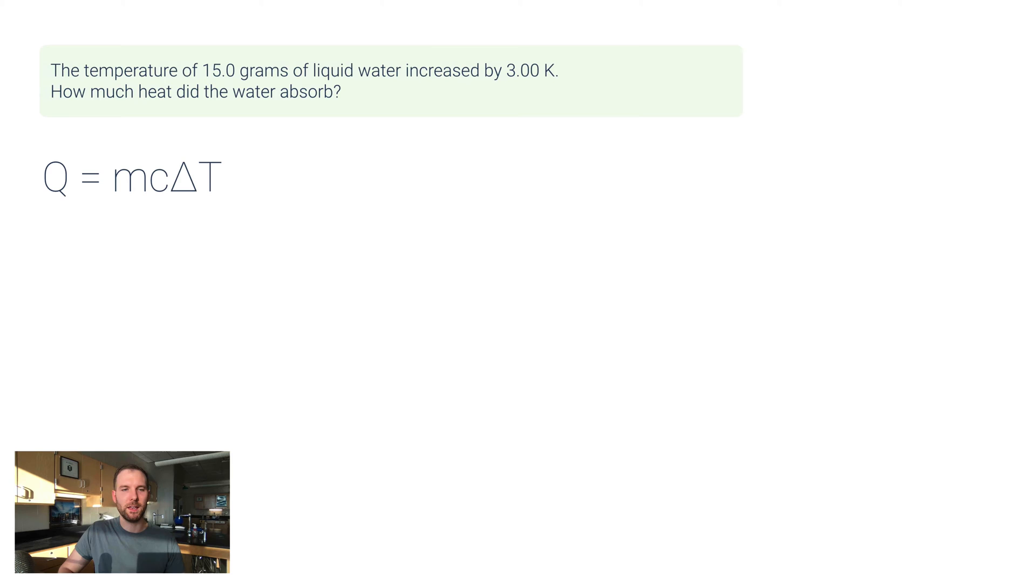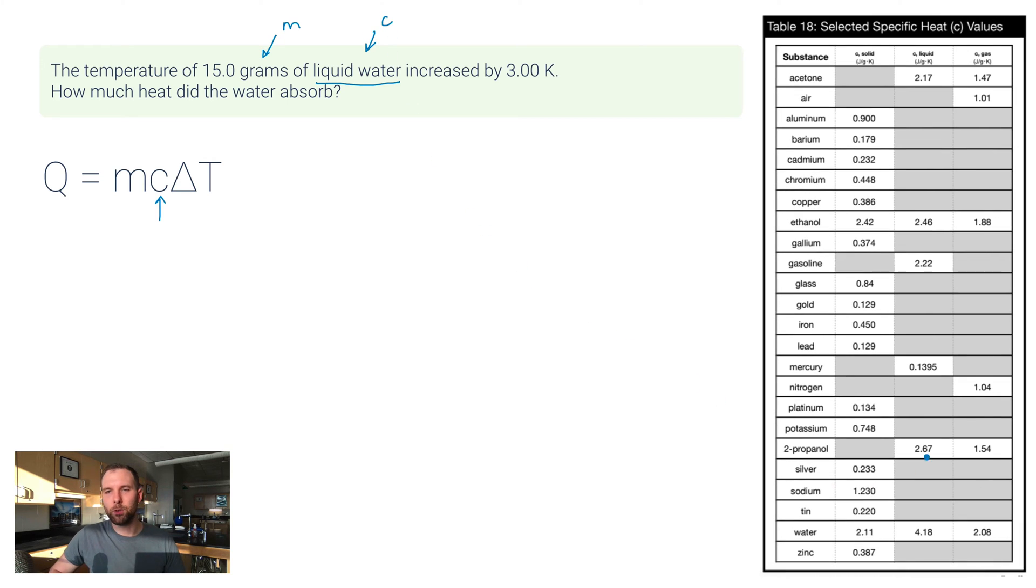So let's do some example problems. This says the temperature of 15.0 grams—okay, well that's a mass of liquid water. Heads up, we need to find the specific heat value for liquid water. Now this one's very common, but if you don't know it, you can pull out our reference table here, Table 18. Here's the specific heat of water as a liquid: 4.18, so that's 4.18 joules per gram degree Celsius. And then it says it's increased by 3.00 Kelvin. Well there's T, and that's equivalent to a difference of 3.00 degrees Celsius. So it really does not matter between Celsius and Kelvin for this because we're using delta T.